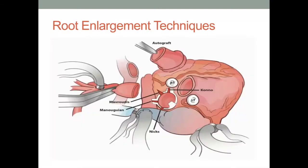The following is a general schematic focusing upon the location of incision for several enlargement strategies. There is an error in this pictorial regarding the right versus left coronary arteries. This slide also illustrates to some extent the difference between anteriorly versus posteriorly directed root enlargement techniques.